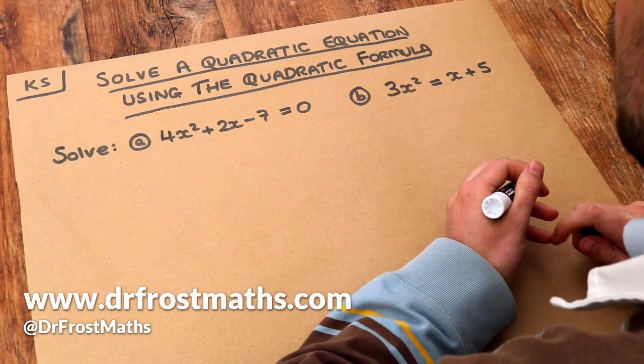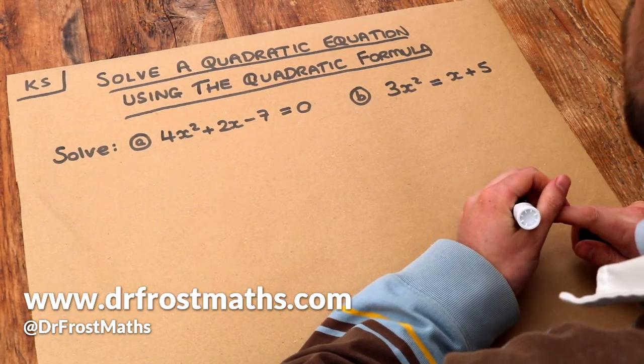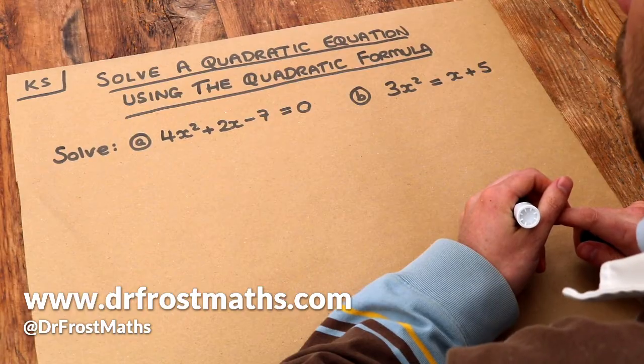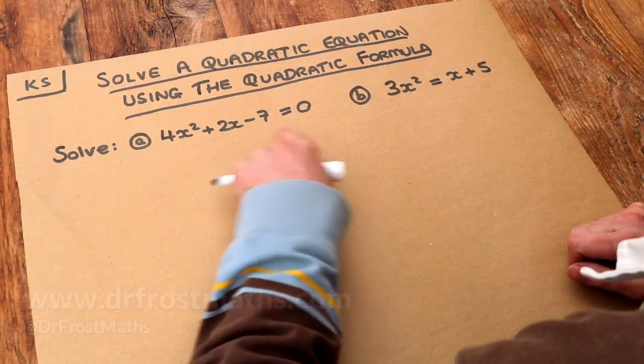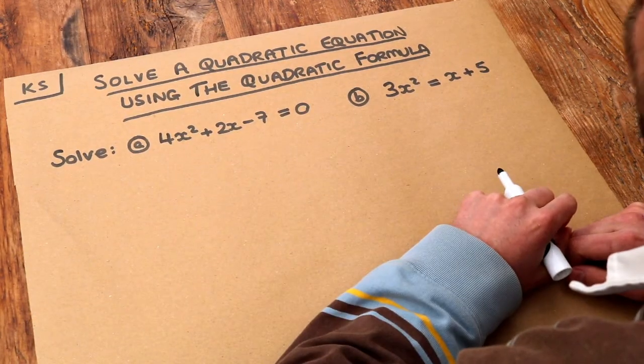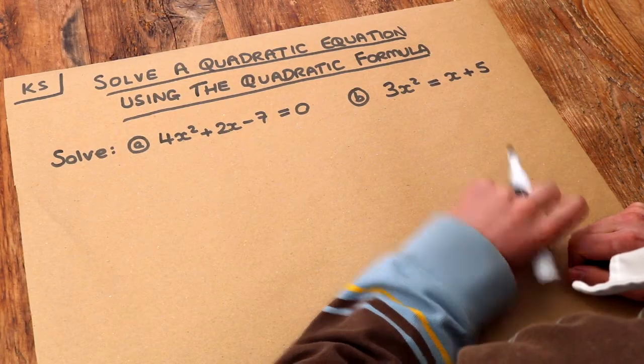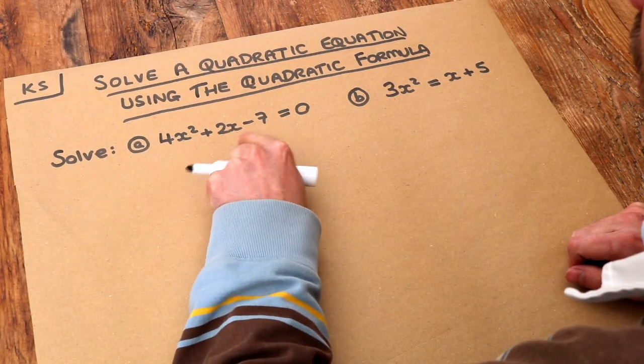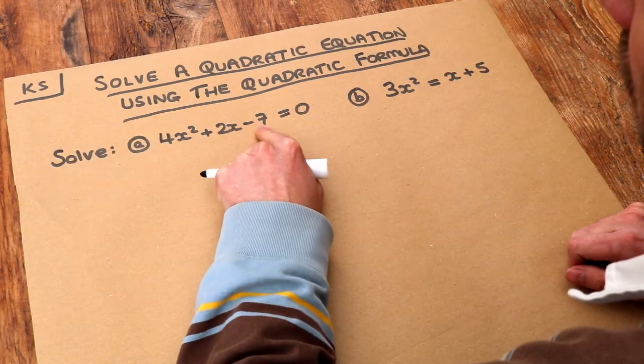Hello and welcome to this Dr. Ross Math's key skill video on solving a quadratic equation using the quadratic formula. We have these two quadratic equations, and what makes them quadratic equations is that we have an x squared term, an x term, and a constant term which doesn't have an x in it.